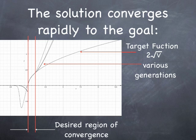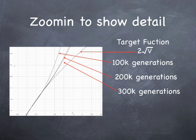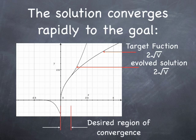So let me zoom in on the thing here. So the target function is 2 times the square root of v. And after 100k generations, it's pretty close, but it's still far off. 200k generations, 300k generations, you see it's like closing in on the solution. So here's the final one that I got. And the target function and the evolved solution, you see in the desired region of convergence, they're exactly the same.